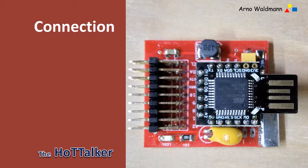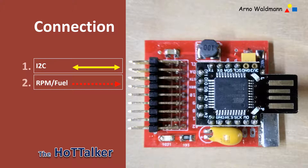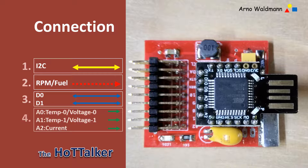The Hot Talker supports four types of connection. Firstly, one I2C bus connection. Secondly, two connections for RPM and fuel sensors. Thirdly, two direct connections for digital input or output. Fourthly, three connections for analog sensors.